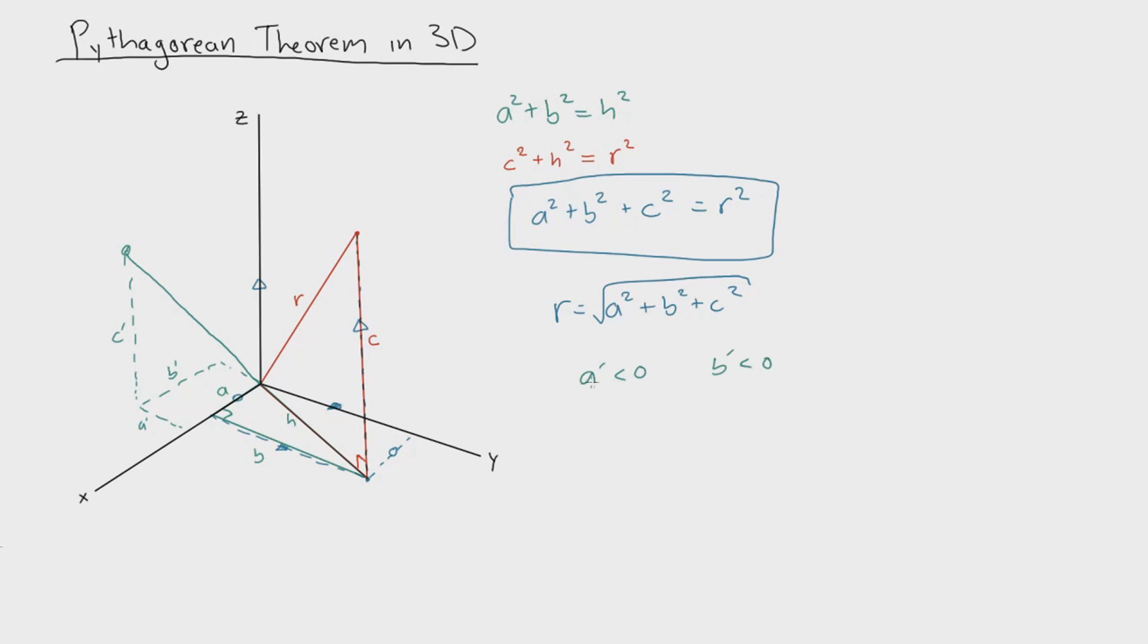if we put that value of a into the Pythagorean theorem in 3D, we notice that a prime gets squared, meaning it becomes a positive value. So whenever you take a number multiplied by itself, you're always going to get a positive value, regardless if it was negative. So this Pythagorean theorem in 3D works for all points that lie in space.